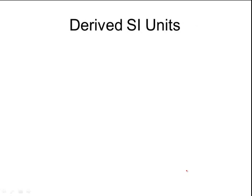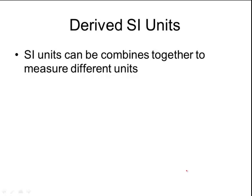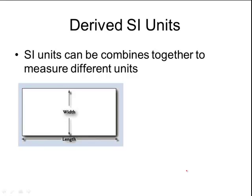We can also derive our own units. We can take all of those base units, those SI base units, and we can combine them together to measure different units. So here I have like a rectangle, and if I wanted to find the area of the rectangle, I would take width times length, multiply them together. So I would have a meter times a meter, and I would multiply them together to get a meter squared. And that's a derived unit.